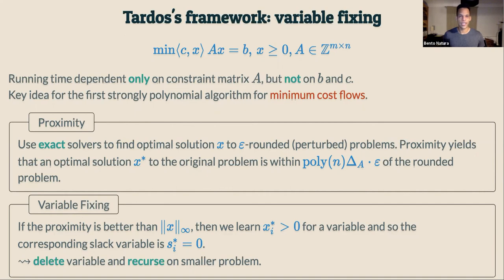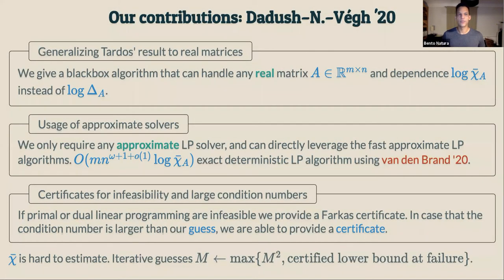Tardos's framework heavily relies on the integrality of the constraint matrix. What we do is generalize it to real matrices as our first contribution. We give a black-box algorithm that can handle any weakly polynomial solver implementing some oracle for real matrices A, with dependence on log chi-bar — the condition number — instead of the logarithm of the largest sub-determinant. Furthermore, it suffices to use approximate solvers instead of exact solvers for the perturbed problem. Using a deterministic algorithm such as van den Brand's, we are able to solve LP in time m · n^ω · log chi-bar.